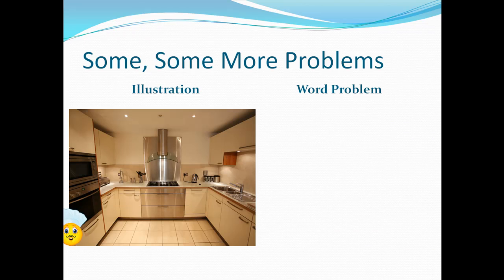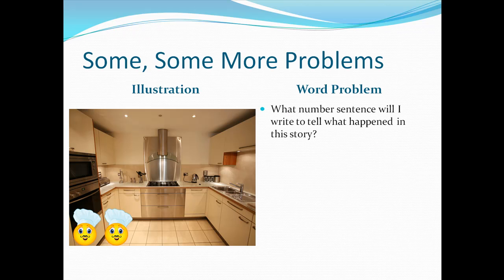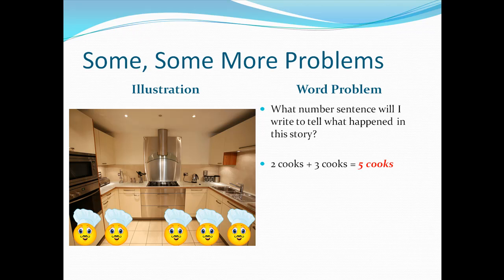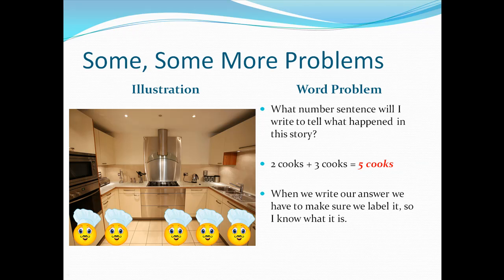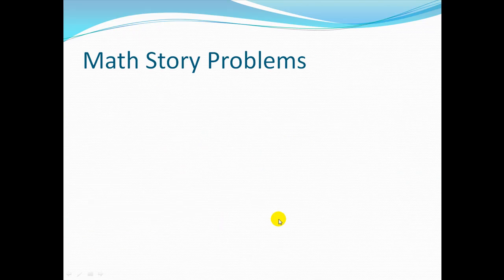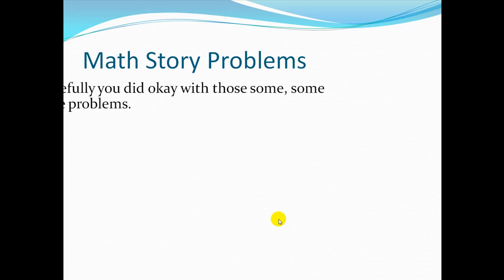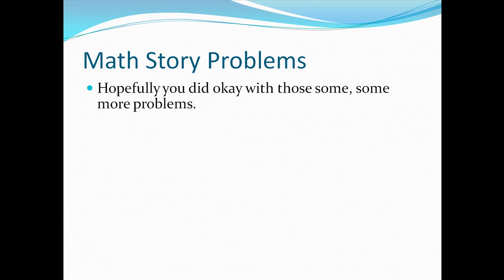Let's take a look at another example. This time, again, see if you can tell me what number sentence I need to write in this story problem. I start out with two cooks, three more come along. So your number sentence has to say two cooks plus three cooks equals five cooks, because there were two there and then three more came along. So more means add. When we write our answer, again, make sure that you label it so I know what we're talking about. Those were our some, some more problems.